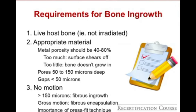There are three main requirements for bone in-growth. Number one: live host bone is required. If given a question involving a patient who has had radiation, do not choose cementless fixation — pick a cemented option. Number two: appropriate porosity is needed. Too much porosity and the surface can shear off; too little and bone won't grow in. The pore depth needs to be between 50 and 150 microns, with a gap of less than 50 microns required. Number three: no motion — greater than 150 microns of motion leads to fibrous in-growth.